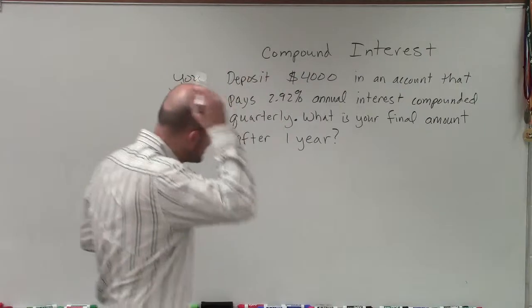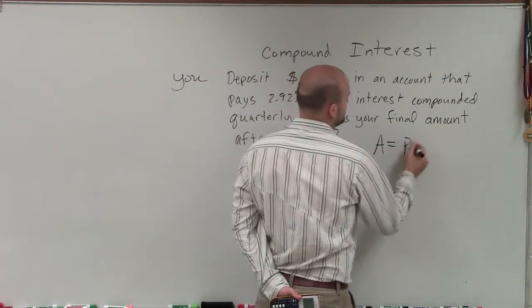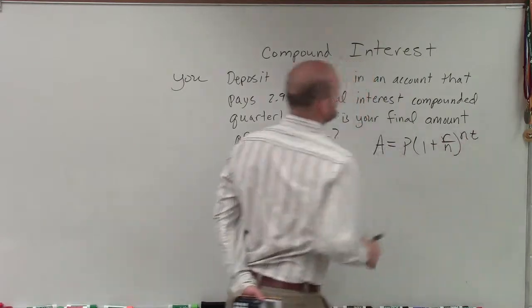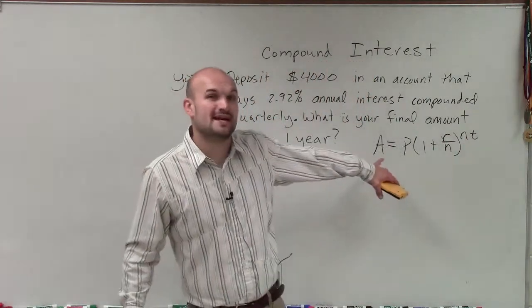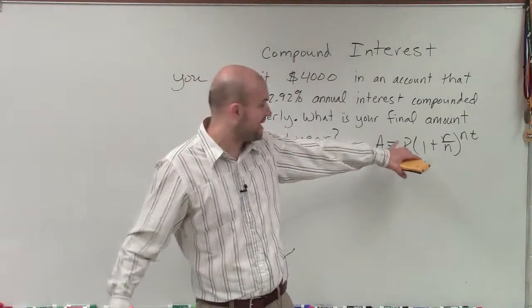When doing a compound interest problem, we first need to know the compound interest formula, which is A = P(1 + R/N)^(NT). A represents our final amount. P represents our principal, which is our initial deposit.